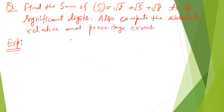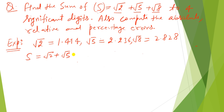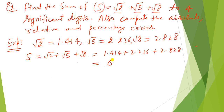Now I am taking a question based on the error. The question is: find the sum S = √2 + √5 + √8 to 4 significant digits, and also compute the absolute, relative, and percentage error. Using a calculator, √2 correct to 4 significant digits is 1.414, √5 is 2.236, and √8 is 2.828. So the sum S = 1.414 + 2.236 + 2.828 = 6.478.